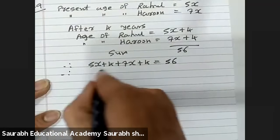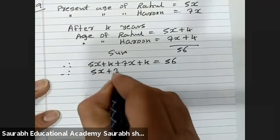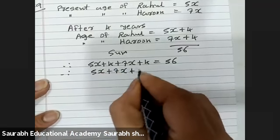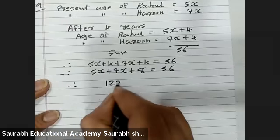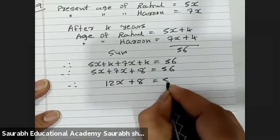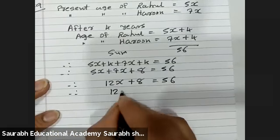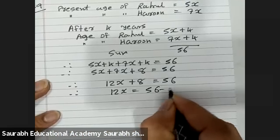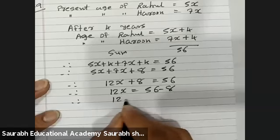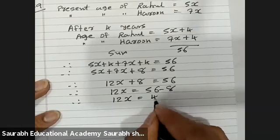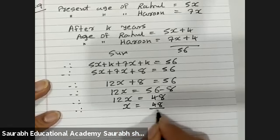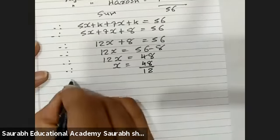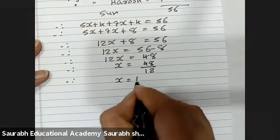Now, 5x plus 7x is 12x, and 4 plus 4 is 8. So 12x plus 8 equals 56. Therefore 12x equals 56 minus 8, giving 12x equals 48. So x equals 48 divided by 12, which gives x equals 4.